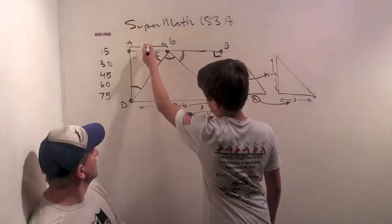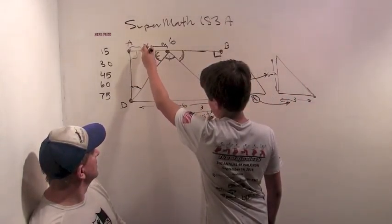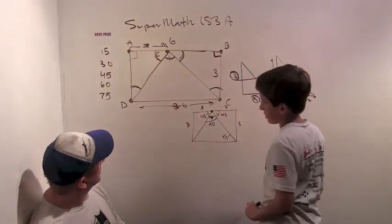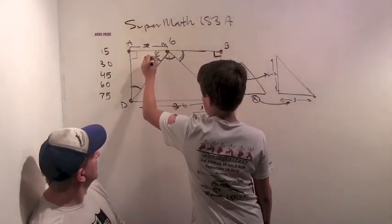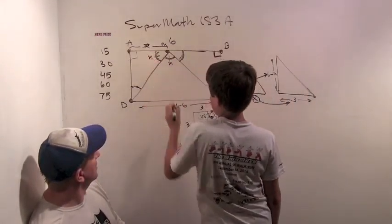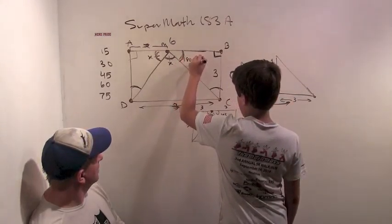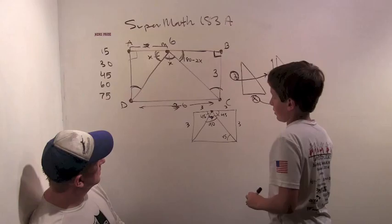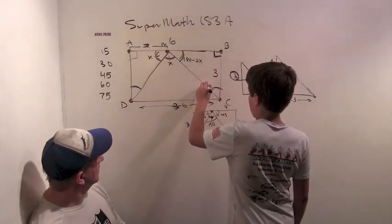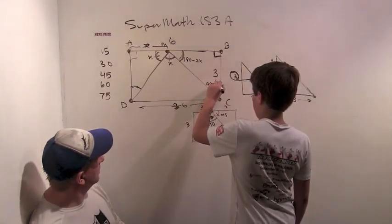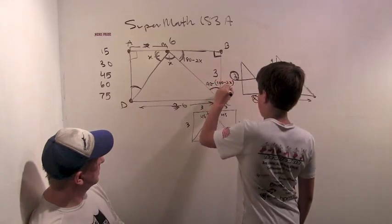I'll call this one, well, I've already used X. Actually, we don't really need X. Yeah, we don't need that right now. So I'll call this X. Alright. X, X. This is 180 minus 2X. And then this is 90 minus 180 minus 2X.